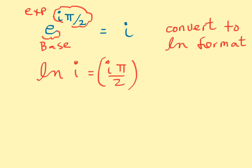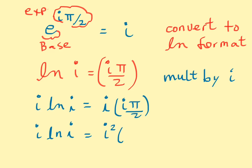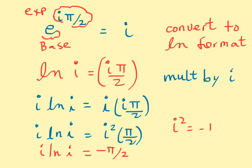What we're going to do now is multiply both sides of this equation by the imaginary unit i. So we'll have i times ln of i equals i times iπ/2, which means i times ln of i is equal to i squared times π/2. And since i squared is equal to −1 by definition of the imaginary unit, this tells us that i times ln of i is equal to negative π/2.